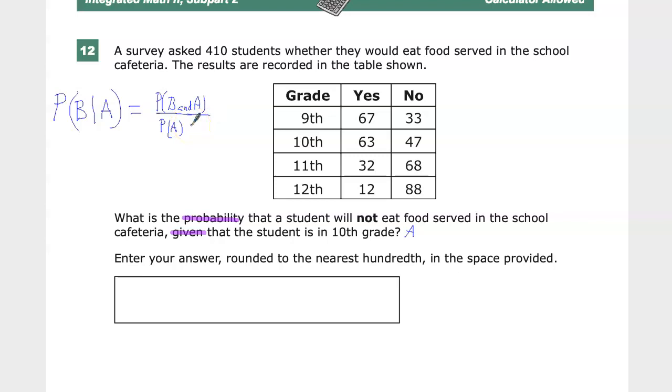So what the B and A part looks like is, what's the probability that both events are occurring at the same time? But what's B? Well, the probability that they won't eat any food. So the first thing that I need to do is find out what the probability of A is. What's the probability that people are in 10th grade if they're 410 students? So the first thing I need to do is get a total over here. I don't really need to know the totals for 9th, 11th, and 12th grade. It's irrelevant because they gave me this information. But the total here, 63 plus 47 is 110. So you should be able to get that yourself.